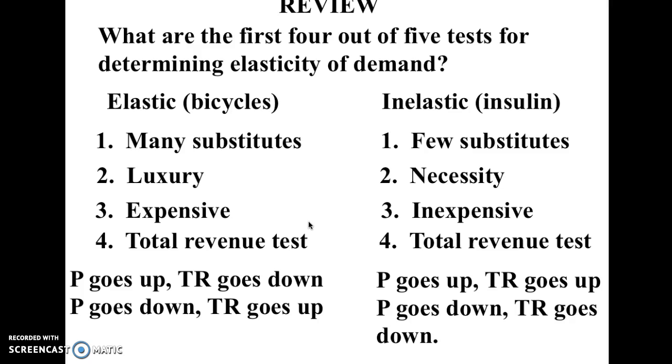So just to quickly review, elasticity can be figured out in a bunch of different ways. Some of them are just sort of basically eyeballing a product to determine whether it's elastic, and the others are much more mathematical. For example, if something has many substitutes like bicycles, it's going to be elastic. If something has very few substitutes like insulin, it's going to be inelastic. If something is a luxury versus a necessity, or expensive versus relatively inexpensive, they're going to probably be inelastic and elastic.